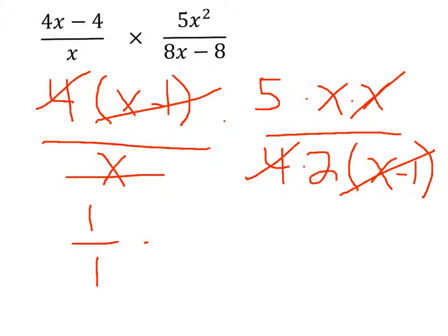What we have left on the right side is 5 times x over 2, so we have 5x over 2.